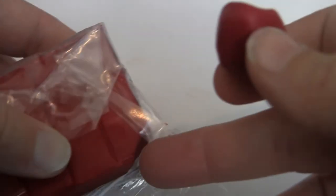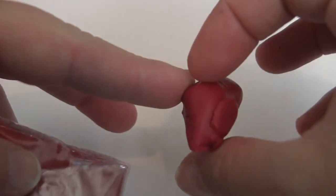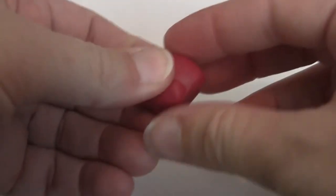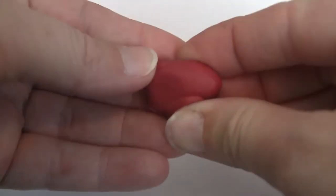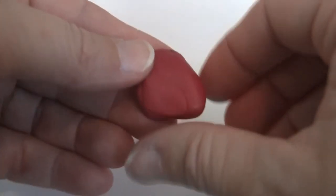While that's baking, you can mix your red. This red is about one quarter pomegranate from Primo, three quarters translucent, and then I added just a touch of fuchsia color just to make it a little bit richer and not quite so bright red.